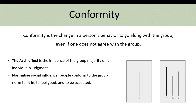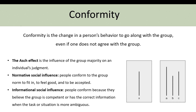There could be normative social influence, where people conform to the group norm in order to fit in, feel good, and feel accepted. There is also informational social influence, where people conform because they believe the group is competent or has the correct information, especially when the task or situation is more ambiguous.